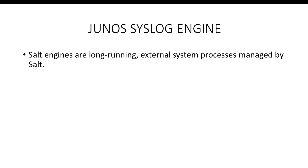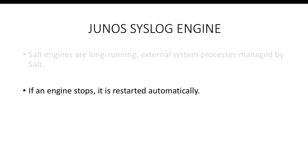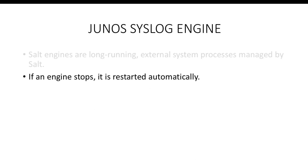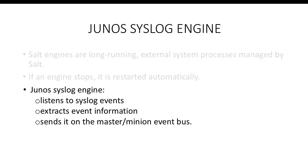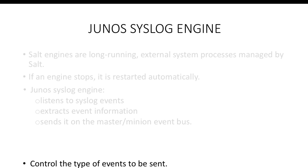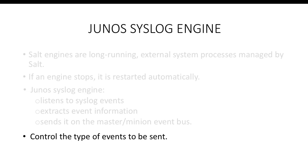The Junos syslog engine. Salt has a concept of engines which are long-running external processes managed by Salt. For example, if an engine stops, Salt will automatically restart it. The Junos syslog engine listens to syslog events from various Juniper devices, extracts the event information from the syslog data and sends it on the master or the minion event bus. The syslog engine can run on both master and the minion. The user has the ability to control the type of events which will be sent on the event bus.